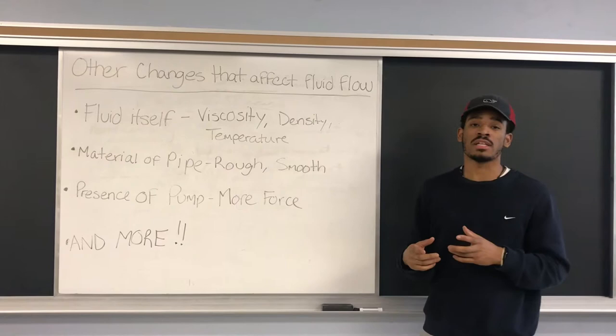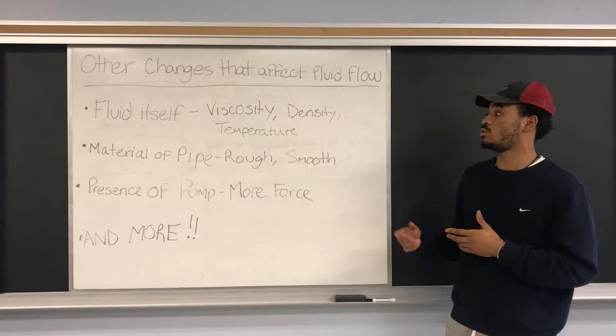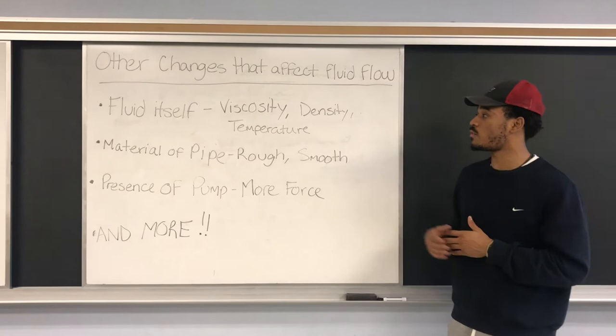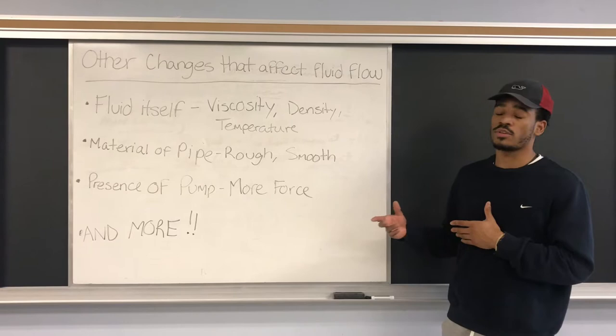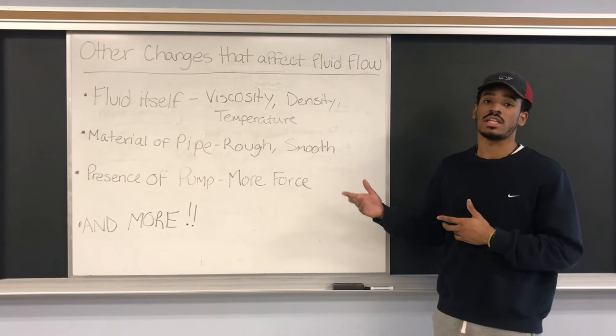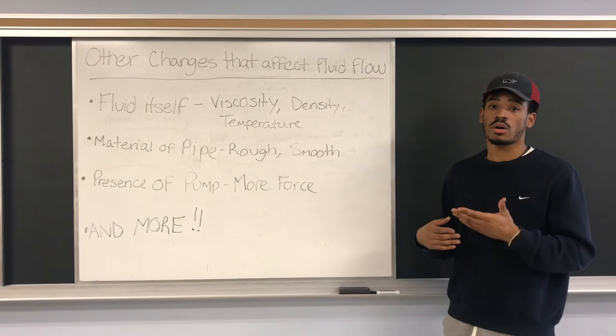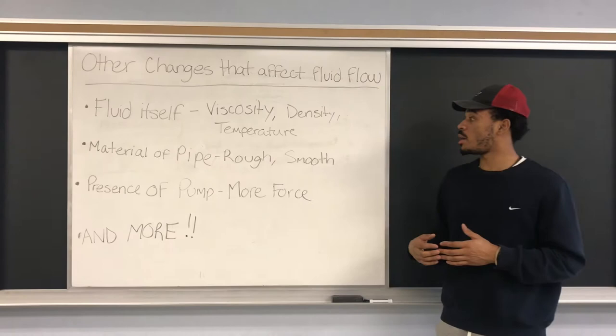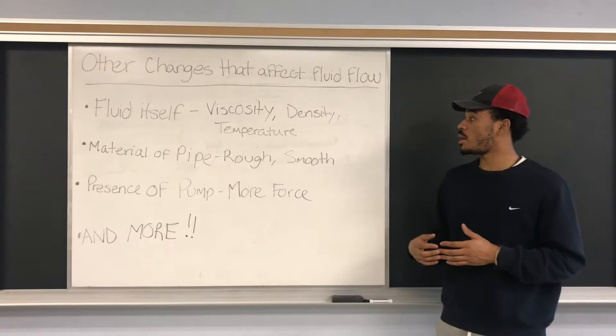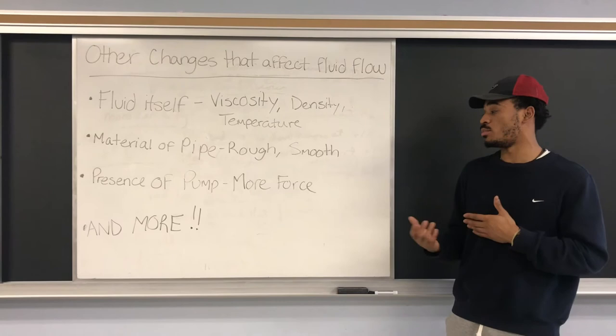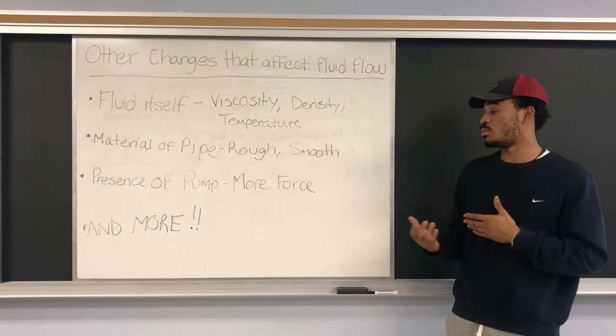Today we showed you how the structure of a pipe and the amount of bends can change how fluid flows through it, but there are other changes you can make. The first thing you can change is the fluid itself — if you had honey instead of water, the time to flow through would take longer because honey has a higher viscosity and higher density than water. Also, if you change the temperature of the honey, the fluid flow would change — decreasing if it got warmer and increasing if it got colder. The next thing you can change is the pipe material: the rougher the surface, the slower it will flow; the smoother the surface, the quicker it will flow.